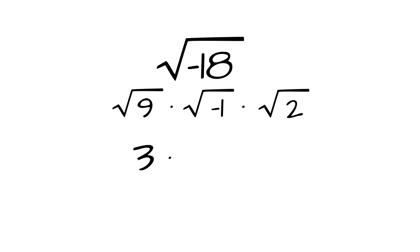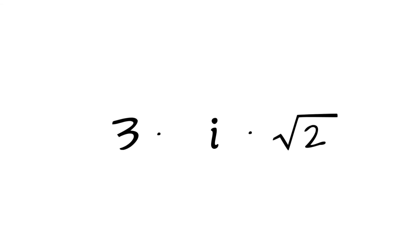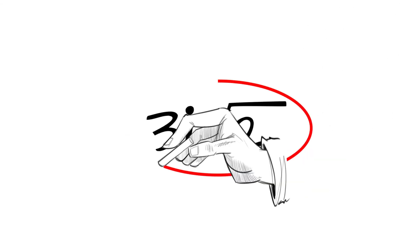The square root of 9 is 3, the square root of negative 1 is i, and the square root of 2 is the square root of 2. So, our final answer is 3i square roots of 2.